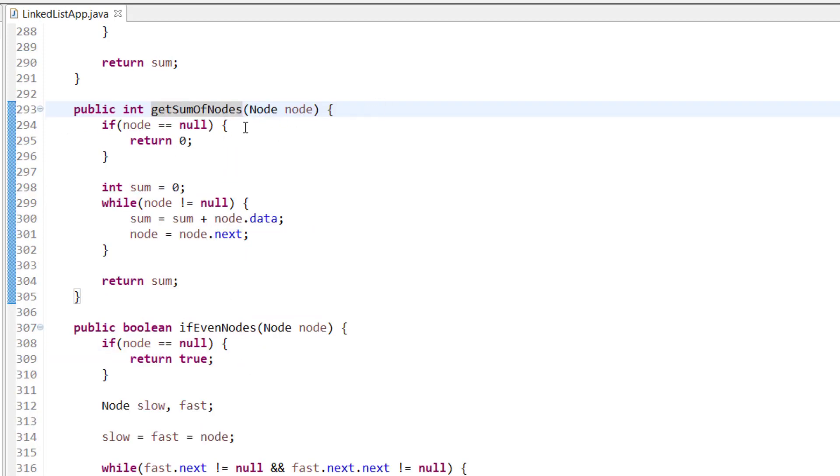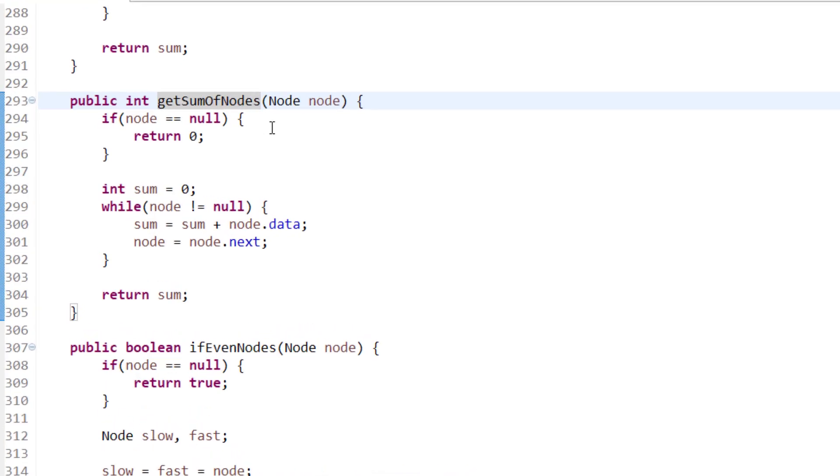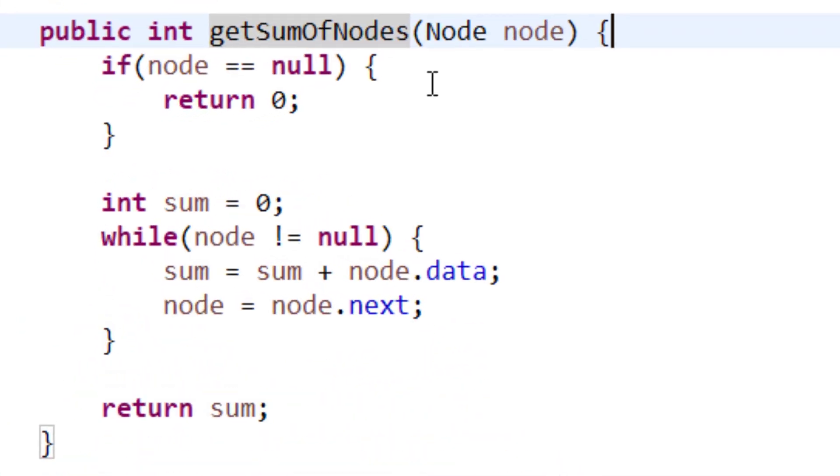This is for the negative case: whenever our node is null, we simply return 0. Otherwise, we take a variable sum equal to 0 and keep iterating until the node is not null. If the node is not null, we add sum equals sum plus node data, and node equals node next. This will go until the end, and then we simply return the sum.